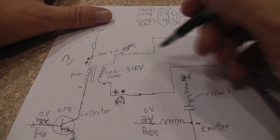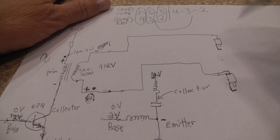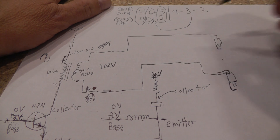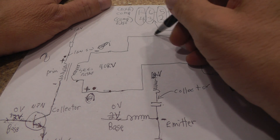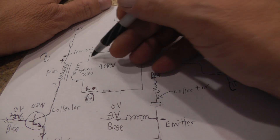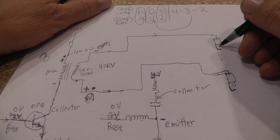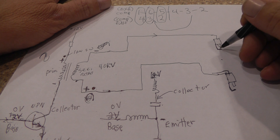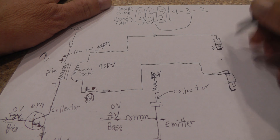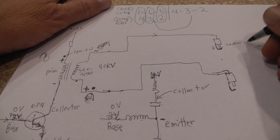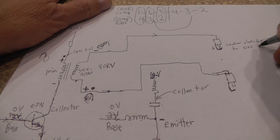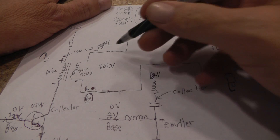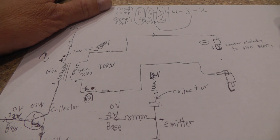Now let's get back to our spark plugs and look at some current flow. We're going to look at electron flow — electron flow is from negative to positive. The electrons are leaving out of this side of the winding, coming down through the center electrode, then jumping from the center electrode over to the side electrode. So that means we have a direction from center electrode to side electrode, and this one is being fired with a negative polarity.